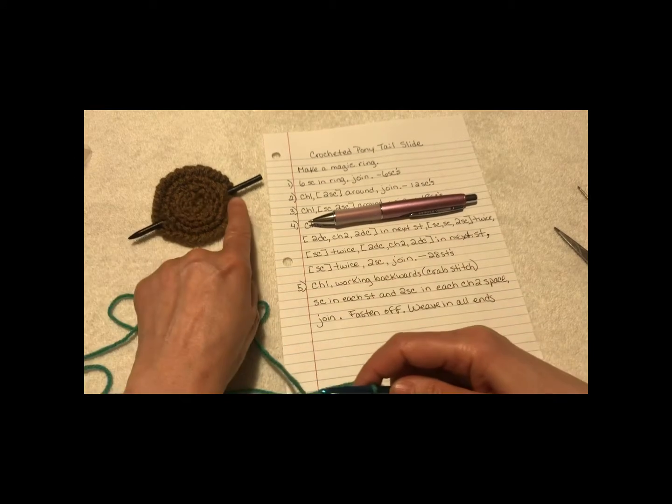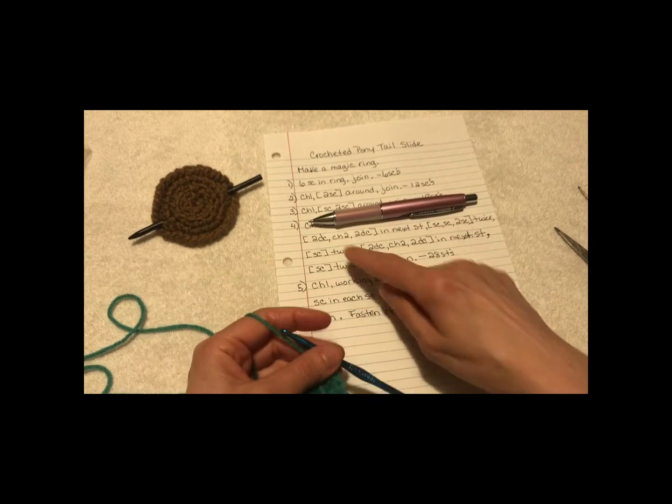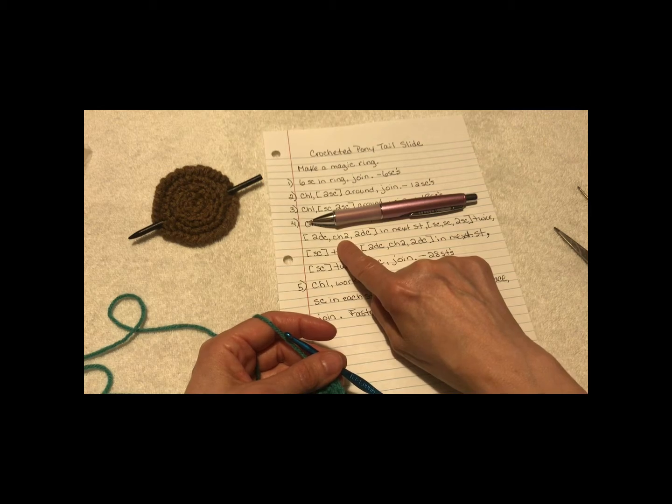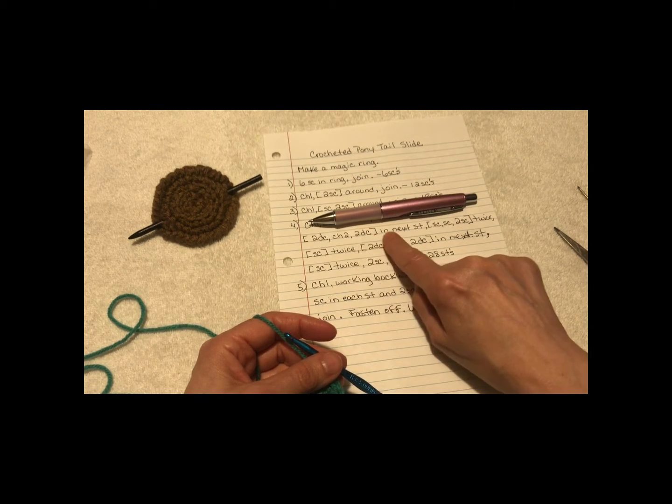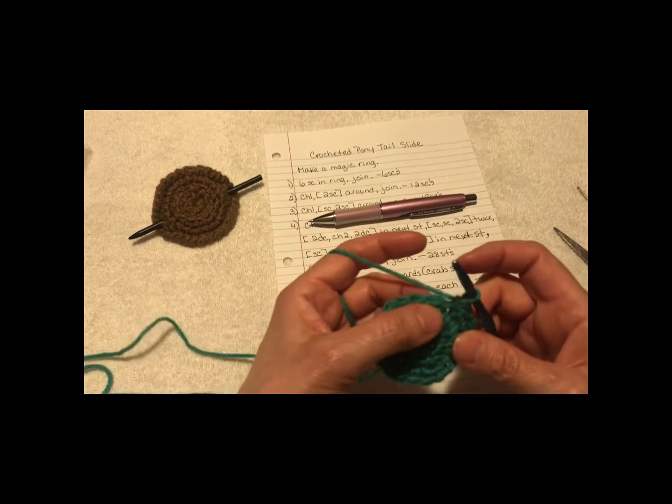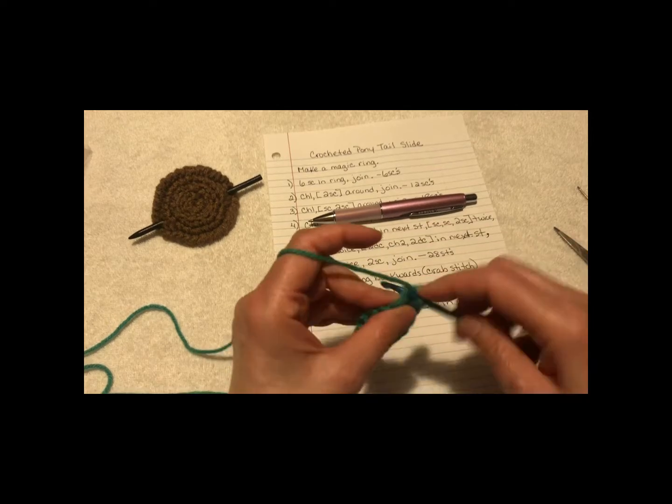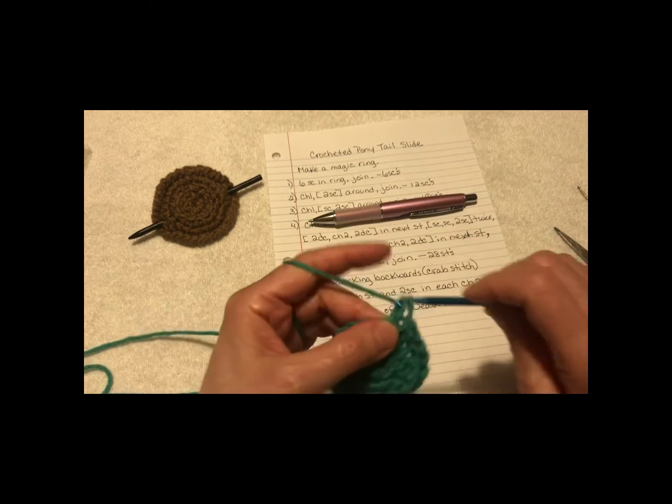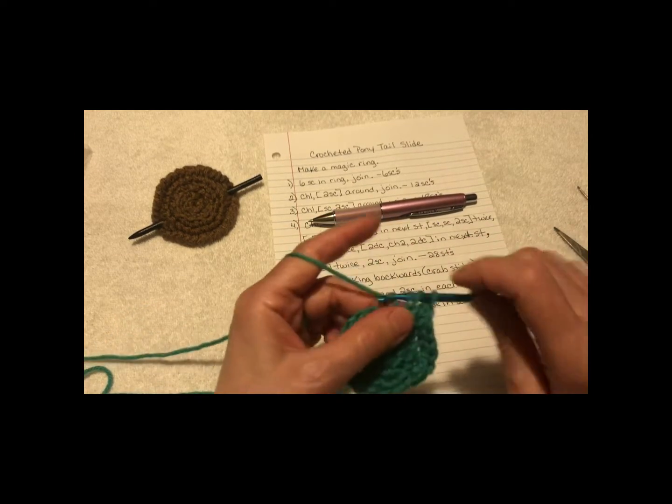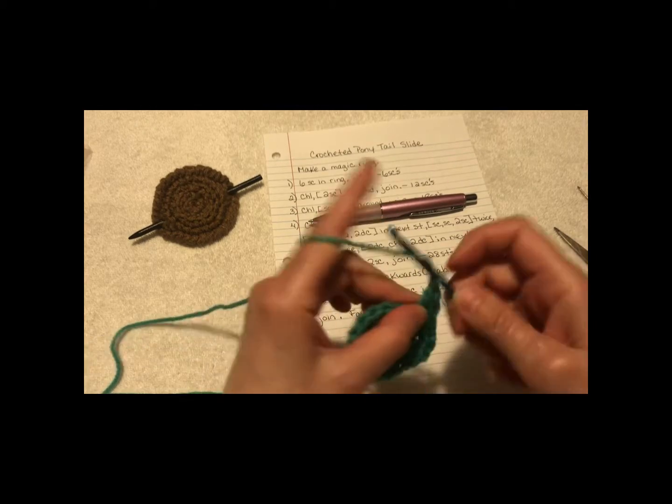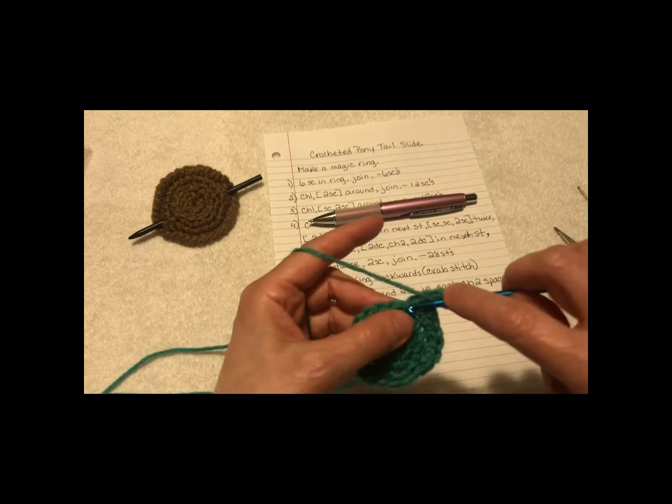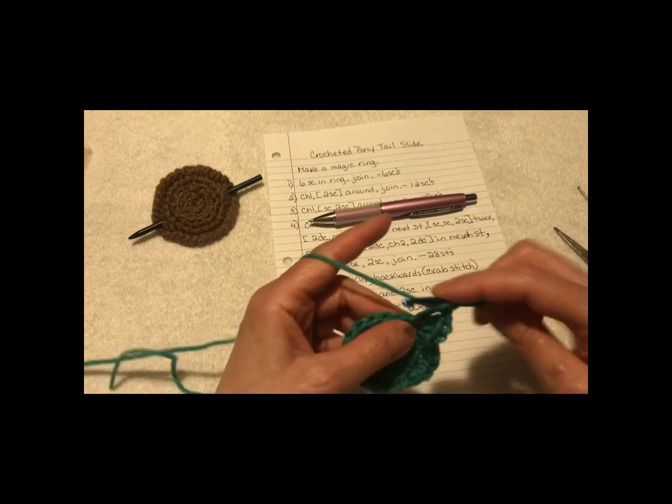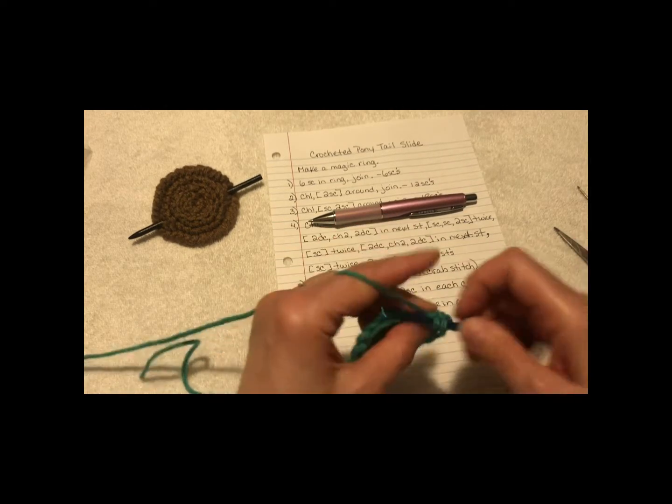Now, to make the hole for the stick. 2 double crochets. Chain 2. 2 double crochets in the next stitch. So, all in the same stitch, we're going to be doing this. So, here's the first double. 2nd double. Chain 2. And still in the same stitch. 1, 2 double. And the last double.